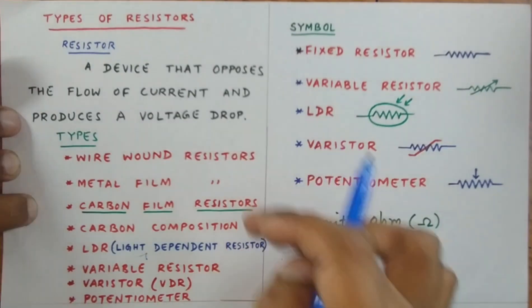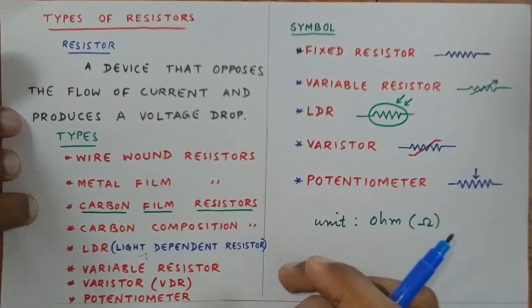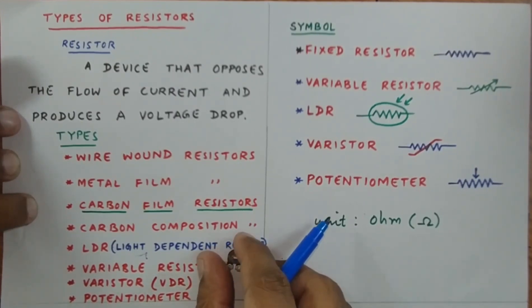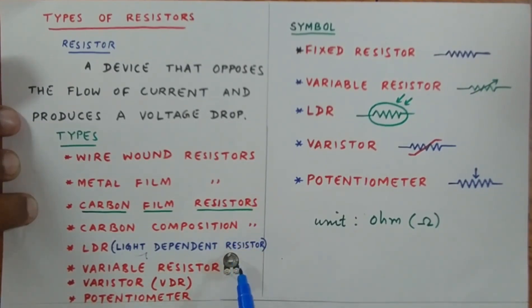Next, variable resistor. Whatever I have shown you till now comes under fixed resistors. What I am going to show you now is called a variable resistor. The name itself denotes that the resistance of this resistor can be varied. This resistor has three terminals. By rotating this notch which is present here at the center, one can increase or reduce the resistance.